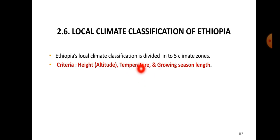Ethiopia's local climate classification is divided into five climate zones, also known as agro-ecological zones of Ethiopia. The criteria used are three: heat or altitude, temperature, and growing season. These three criteria are the basis for the classification of Ethiopian agro-ecological zones.